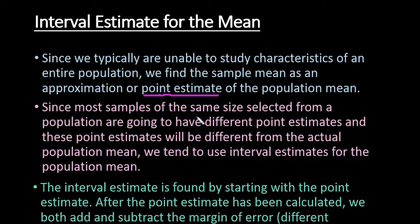If you're trying to figure out what is the population mean weight of those dolphins, we could capture say 30 dolphins, find their weights, and use that as a point estimate. Most of the time, our samples of the same size selected from that population will have different point estimates, and these point estimates will be different from the actual population mean.